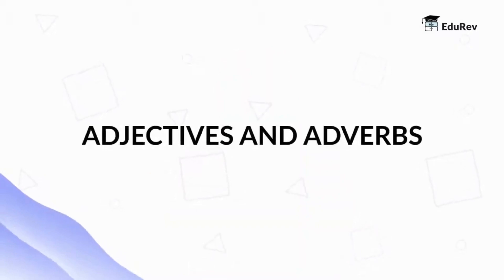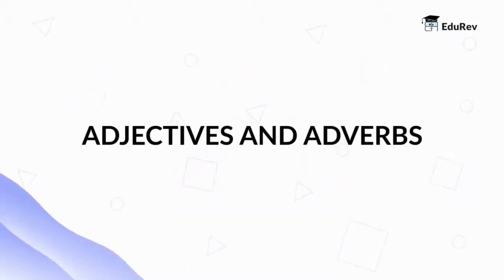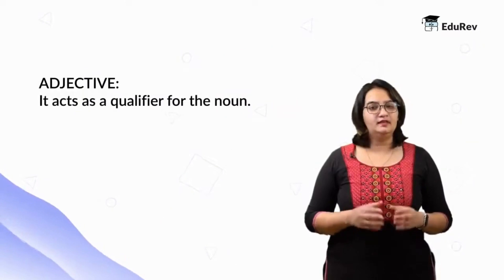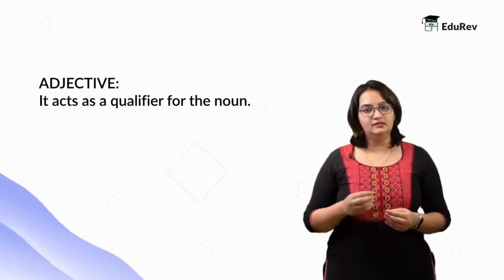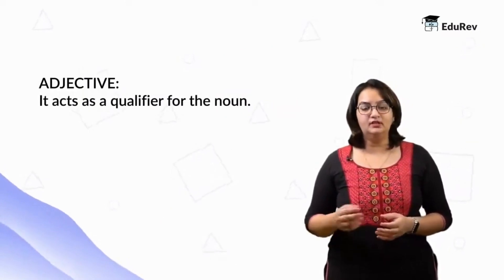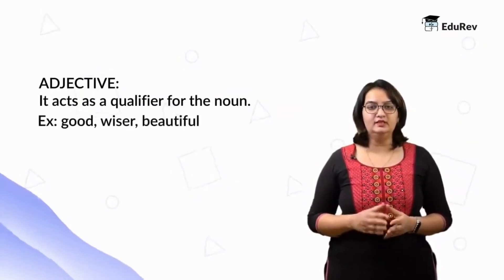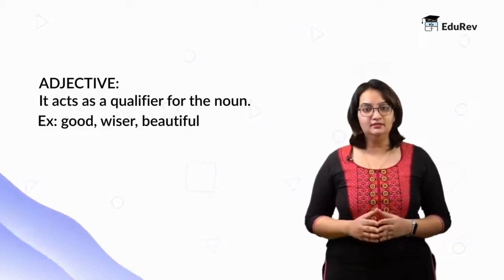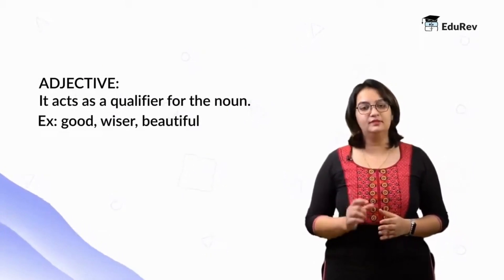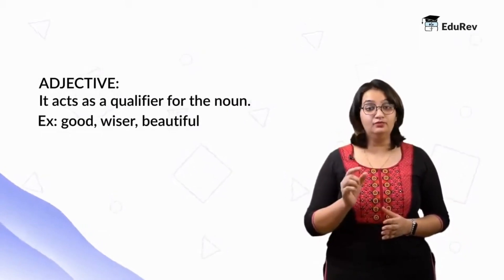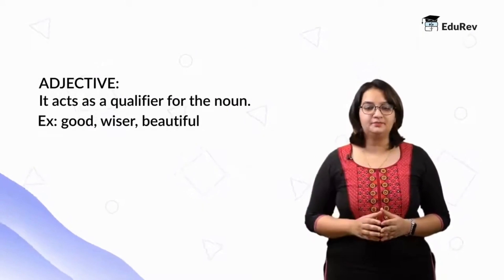In this video, we are going to talk about adjectives and adverbs. An adjective is a word that acts as a qualifier to a noun. For example, she is a good athlete. Here, good will be the qualifier for this particular noun, which is athlete.